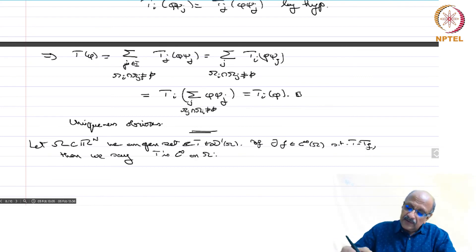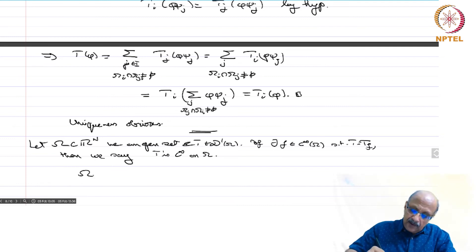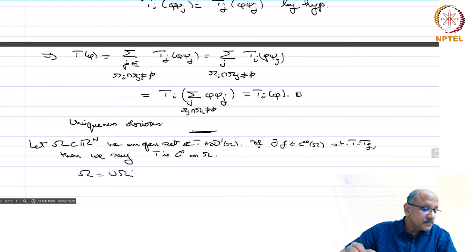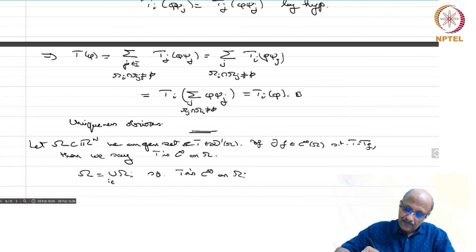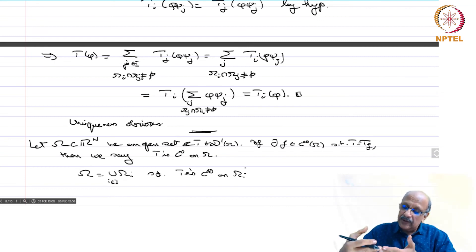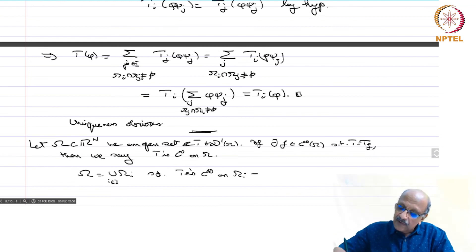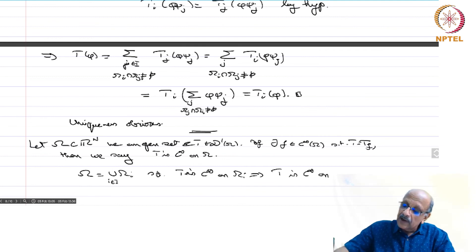Therefore, if omega equals the union of omega_i such that t is C∞ on each omega_i, then since the representing C∞ functions must coincide on intersections, this implies by the above theorem that t is C∞ on all of omega.